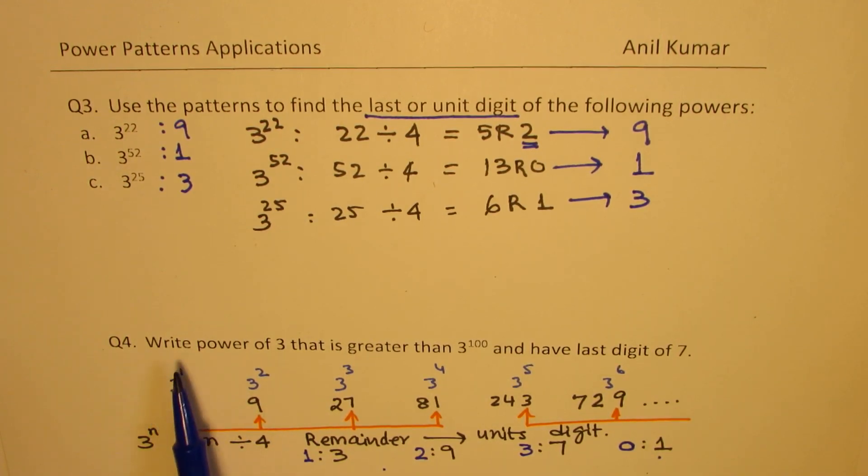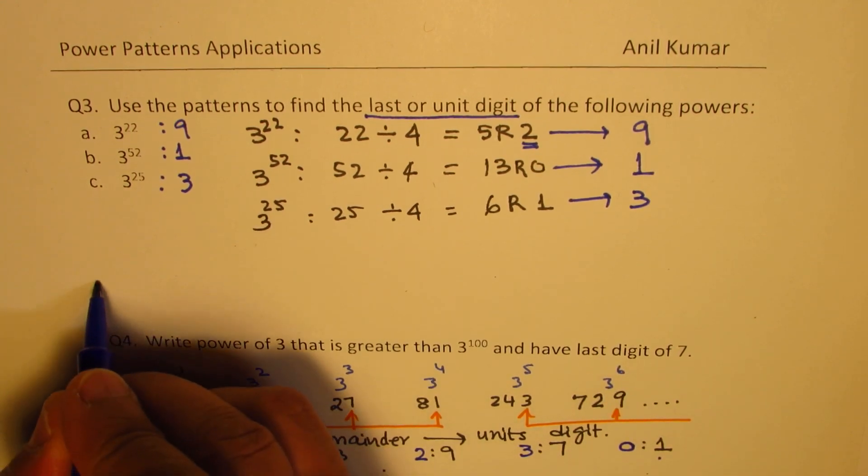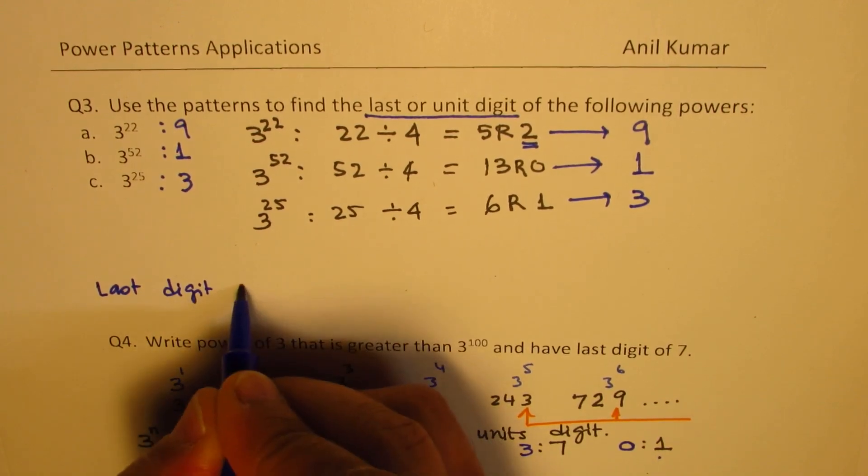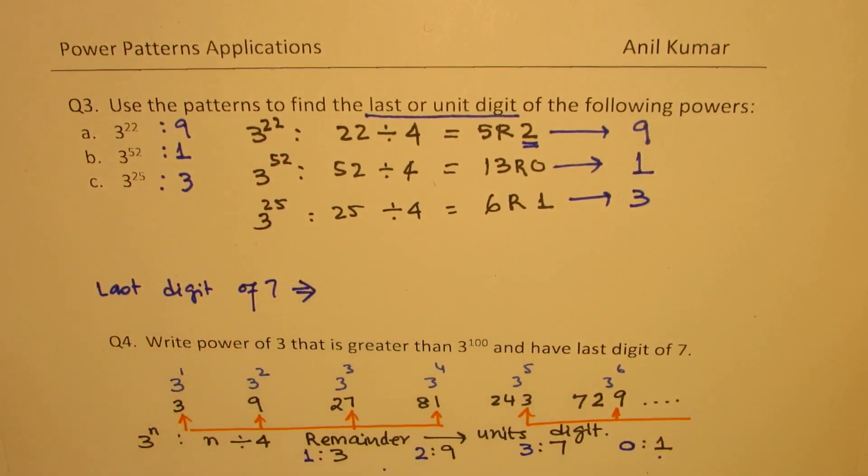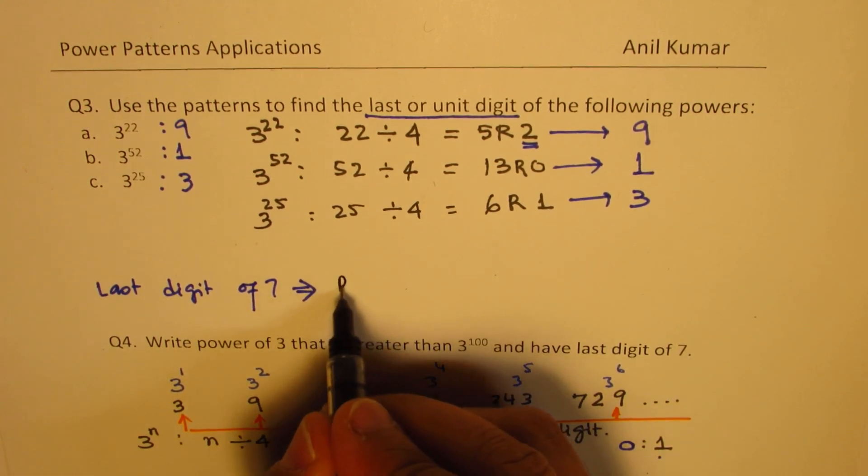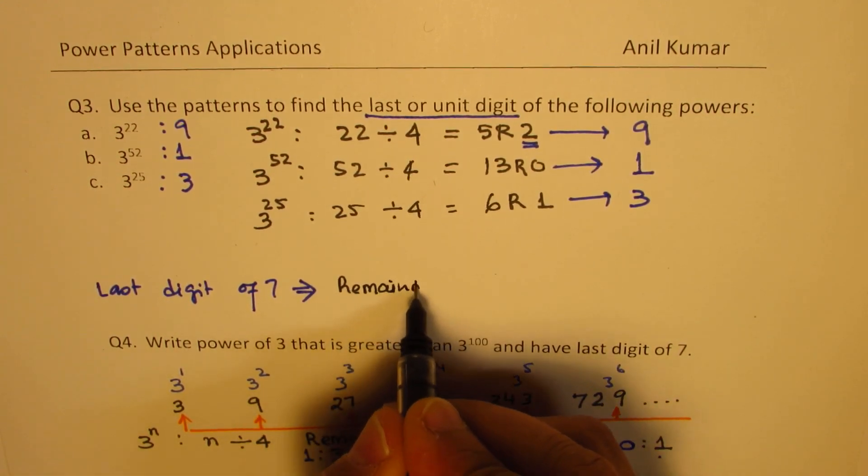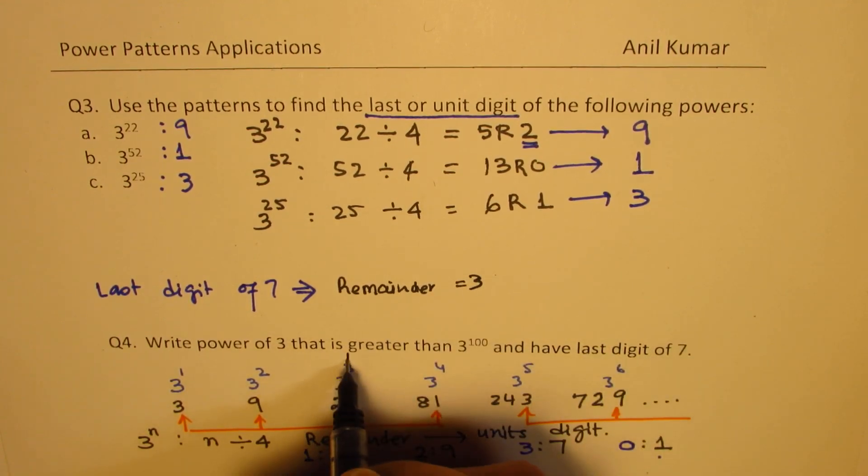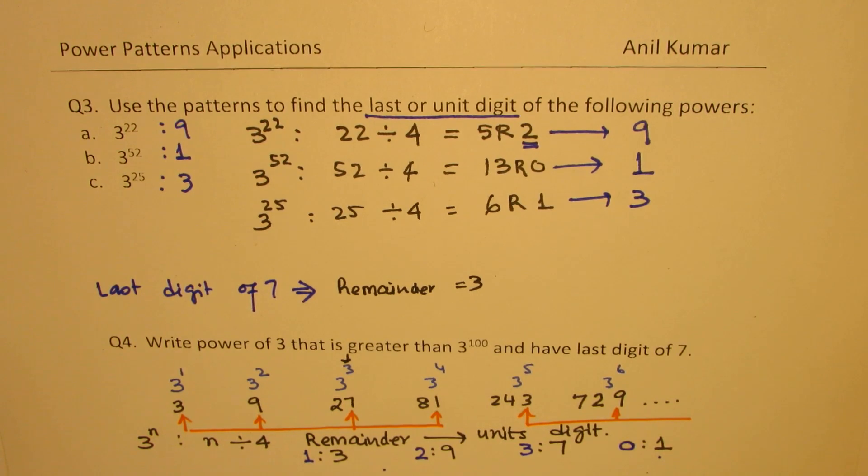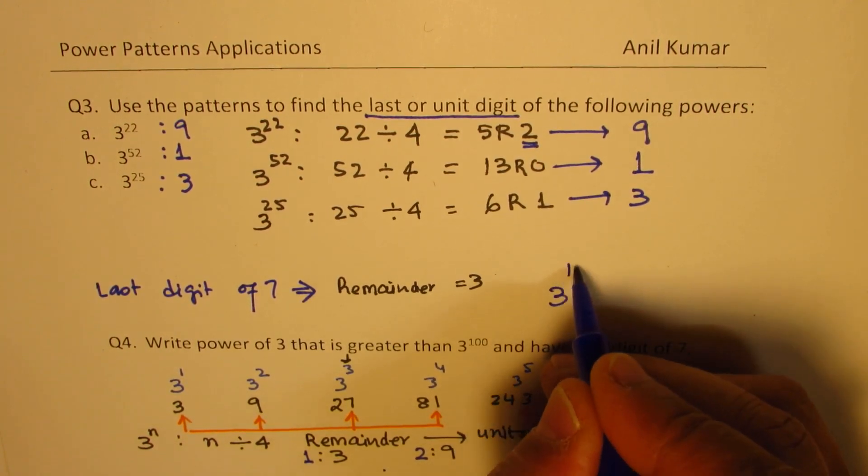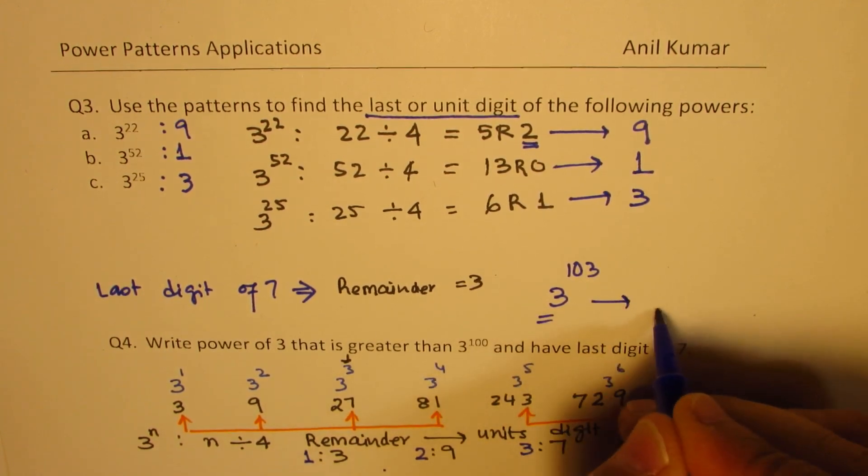Now, question number 4 here is write powers of 3 that are greater than 3 to the power of 100 and have last digit as 7. So, last digit of 7 means what? It means that the remainder should be 3, right? So, we are looking into this portion, remainder being 3. We know 3 to the power of 100, it goes evenly with 4. And, therefore, what do we expect for 3 to the power of 103? So, that should give you the last digit as asked for, which is 7. It does make sense.